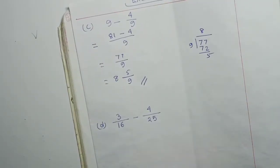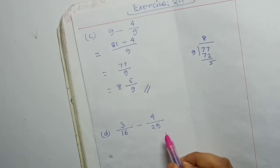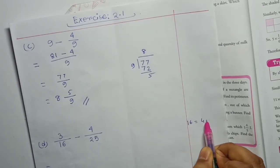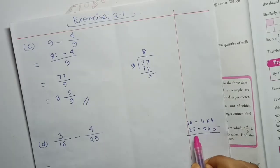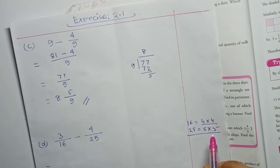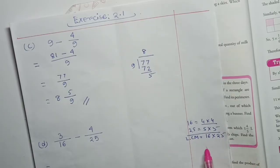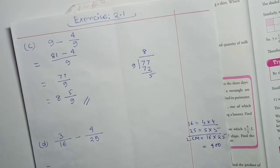Next question: 3 by 16 minus 4 by 25. We need the LCM of 16 and 25. The factors of 16 are 4 into 4, and the factors of 25 are 5 into 5. Since 16 and 25 share no common factors, the LCM will be their product by multiplication.